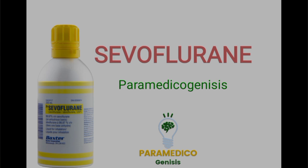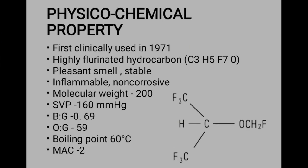Now we are going to discuss sevoflurane (CO4E). It's a very important inhalational agent. The color coding is yellow — yellow color bottle, yellow color vaporizer. This is the introduction. It was first used in 1970. The chemical formula is C3H5O, and the fluorine value is 7 — it's a 7-molecule fluorine, highly fluorinated hydrocarbon.